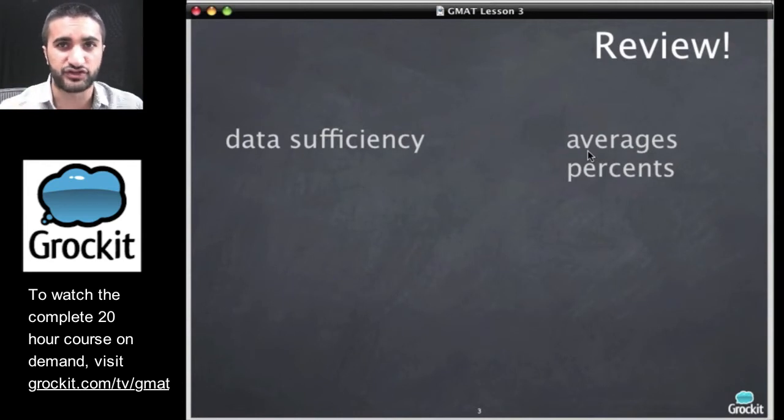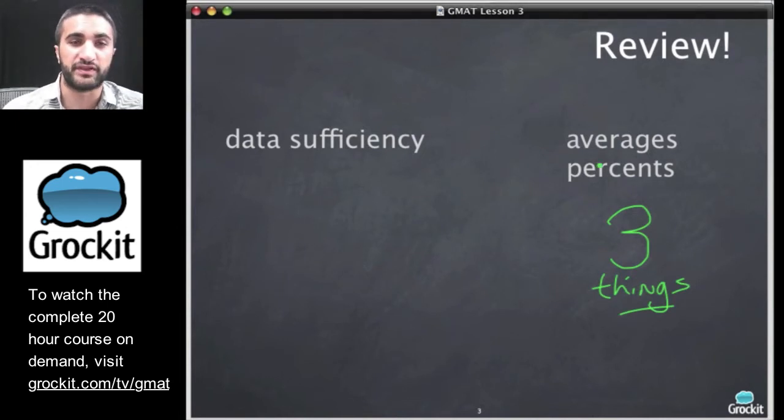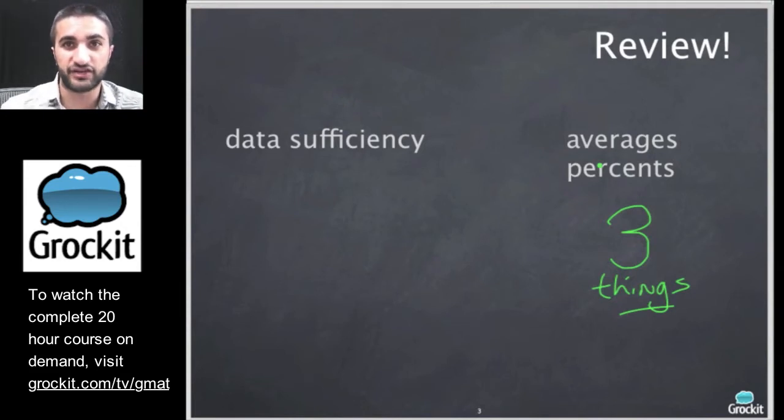Then we talked a little bit about averages and percents, and we said something specific about them. We said they always have how many different things? And the answer to that is there's always three things. The reason it's important to remember this is that when you're managing questions like information management challenges, the GMAT will usually give you one or two of the three things, not all of them, and your job will be to either figure out the third part or potentially even understand that having one of the three things is not enough to answer the question.